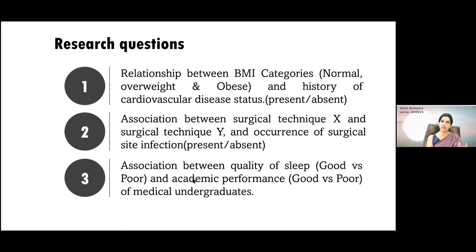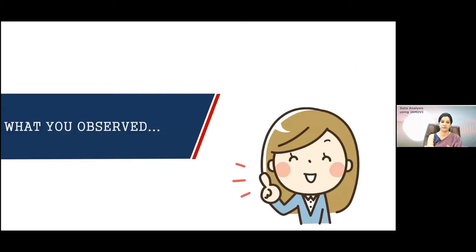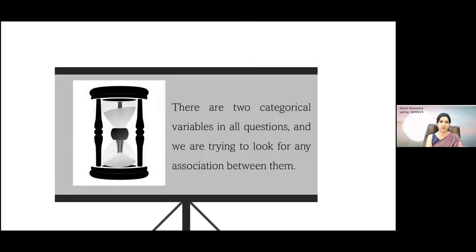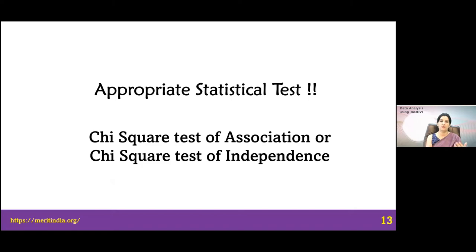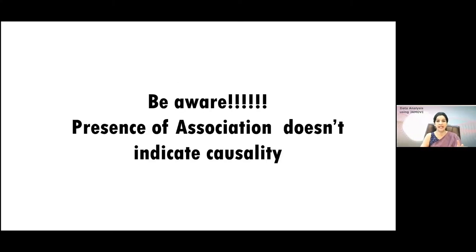If you see the third research question, it is quality of sleep categorized as good versus bad, and academic performance categorized as good versus poor — two levels each, so again a two-by-two contingency table. In all these cases, there are two categorical variables — maybe binomial or polytomous — and we are trying to look for any association between them. We call it the chi-square test of association, or also known as the chi-square test of independence: if there is no association, the variables are independent. Like correlation, a significant chi-square value does not tell you that these are causal in nature.